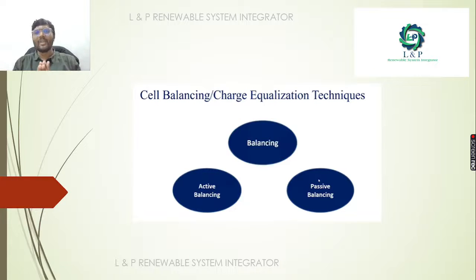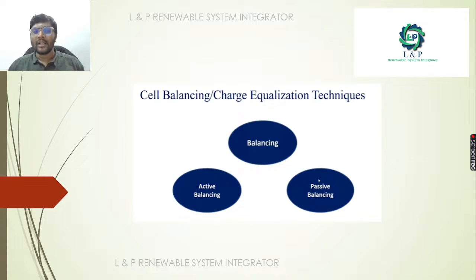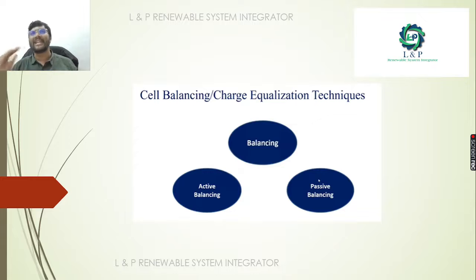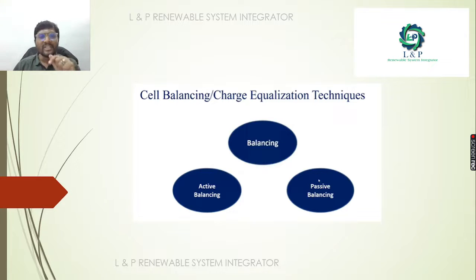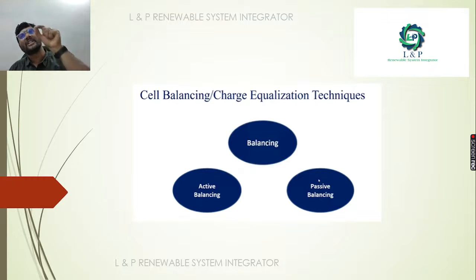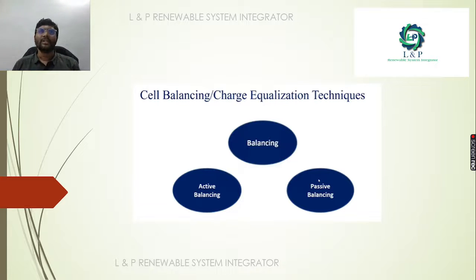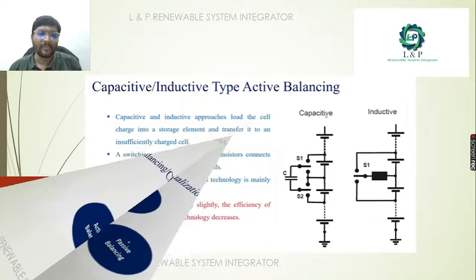When we get into the technique of cell balancing or cell charge equalization, we have two balancing methods: active balancing and passive balancing. The Battery Management System — that is, the BMS — is doing this cell balancing job. We can perform cell balancing with two different methods: one is active balancing and the second one is passive balancing.